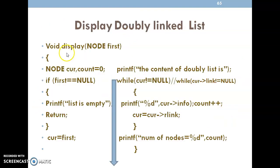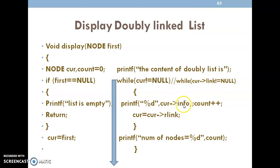Display doubly linked list: Start with current equal to first. If current is null the list is empty. Otherwise, while current pointer r_link is not equal to null, print current pointer info and set current equal to current pointer r_link, incrementing a count for each node. After displaying all nodes, print the number of nodes using the count value. This also effectively finds the length of the doubly linked list.